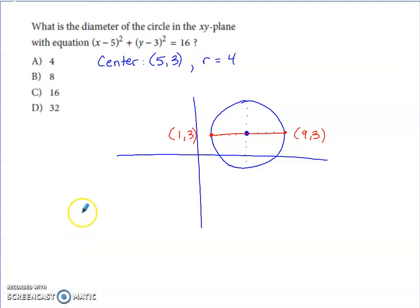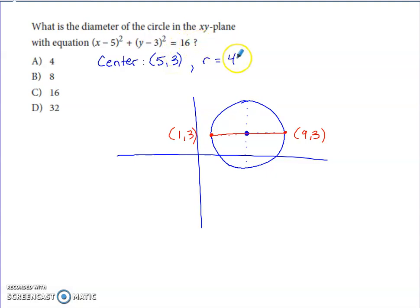Multiple choice: what is the diameter of a circle in the XY plane with the given equation? The center is the opposite of the number with X — that's 5 — and the opposite of the number with Y — that's 3. The value on the right is not the radius; that is the radius squared. The radius is the square root of that value, which is 4.